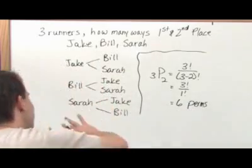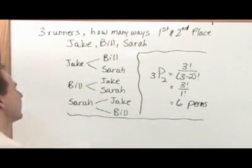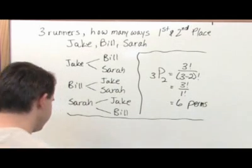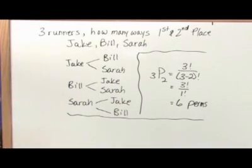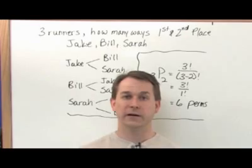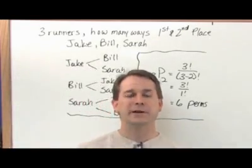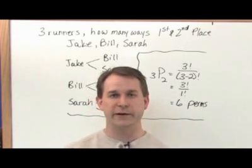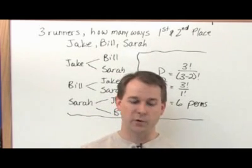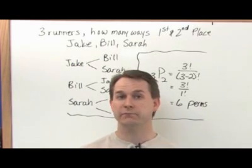For this example, the order mattered — first place, second place. Now let's move into the topic of this section. We're not going to use the word permutation at all; it's called a combination when the order does not matter. Let's use the same names to make it easily relatable. We have Jake, Bill, and Sarah. But instead of winning a race where there's a clear first and second place winner, let's say we have three people — Jake, Bill, and Sarah — and we're going to send two of these three people to a conference in Colorado.